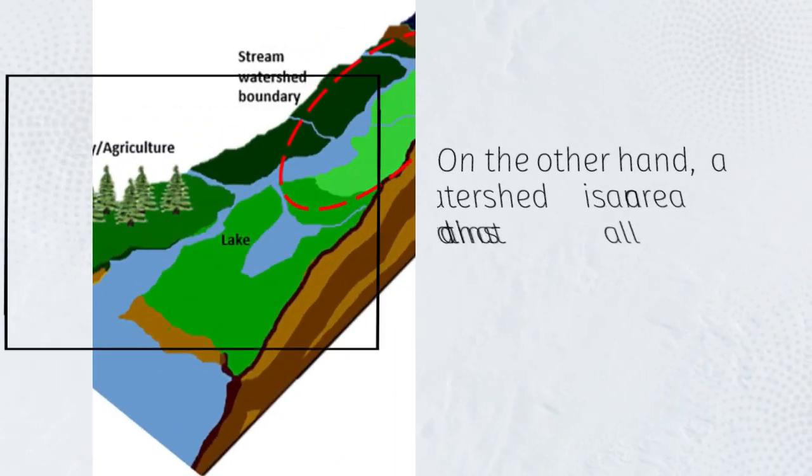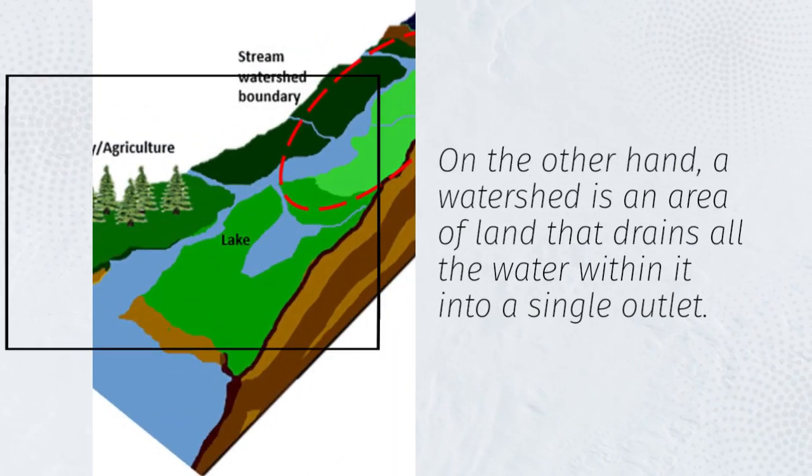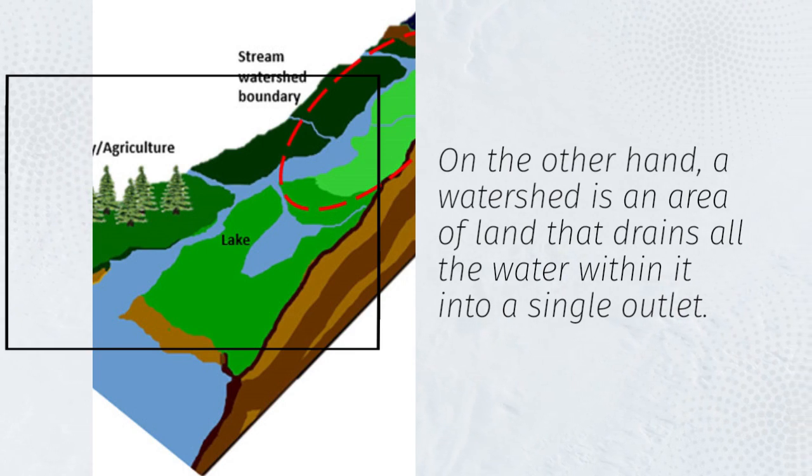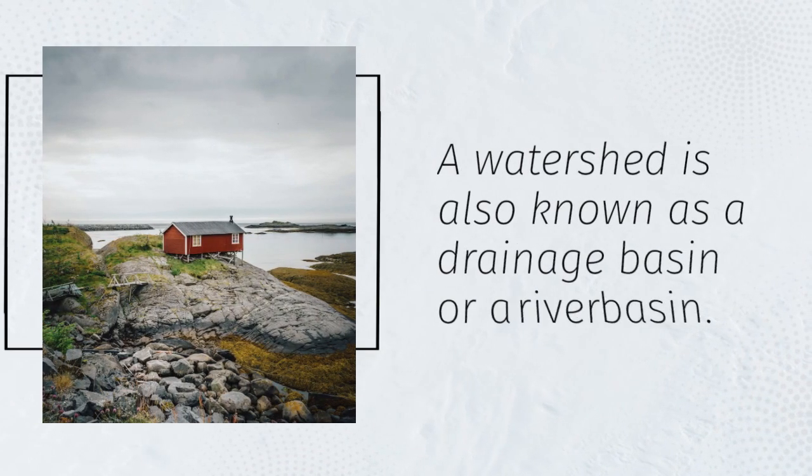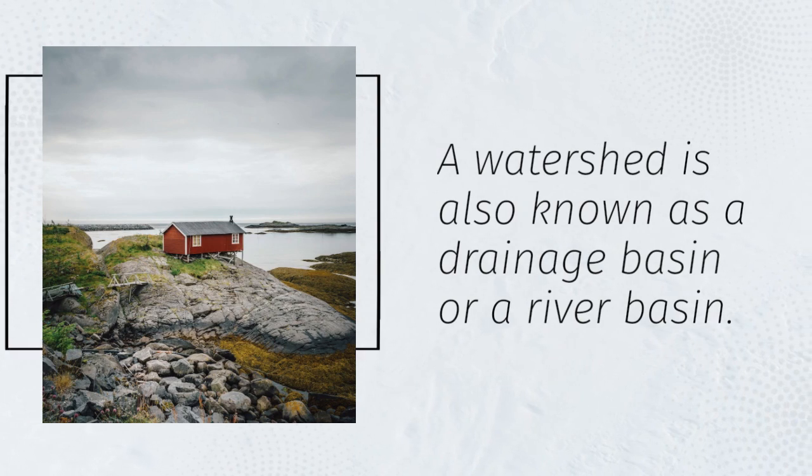On the other hand, a watershed is an area of land that drains all the water within it into a single outlet. A watershed is also known as a drainage basin or a river basin.